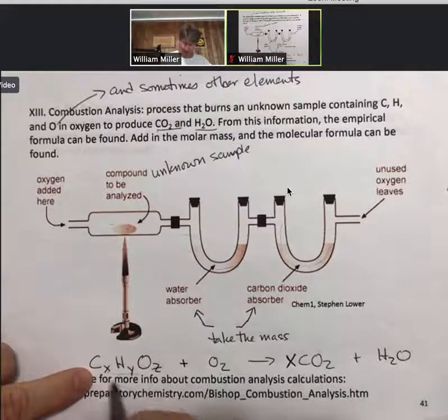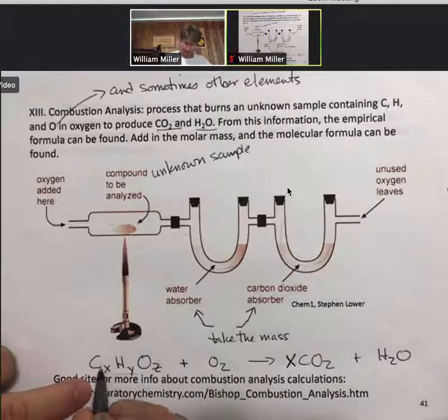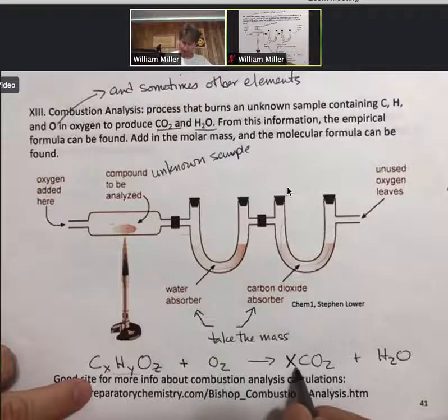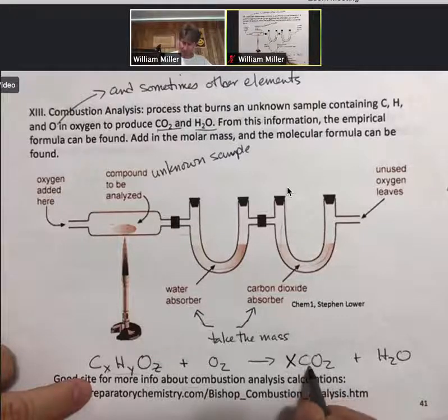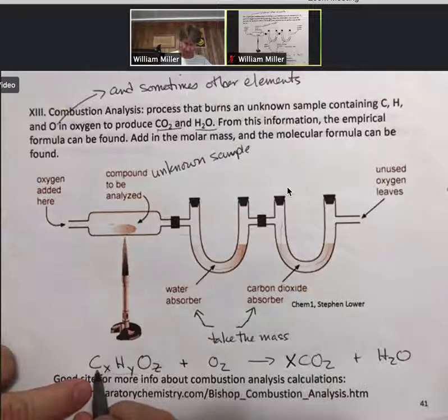And these two numbers are the same number because all of the carbon from the reactant side is here. And all of the carbon on the product side is here. There is a direct relationship between the amount of carbon dioxide produced and the amount of carbon that you start with.